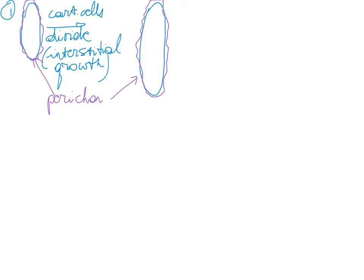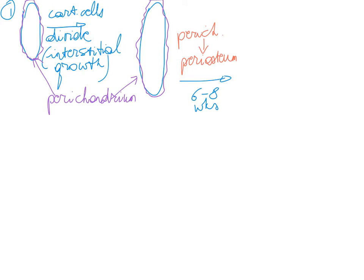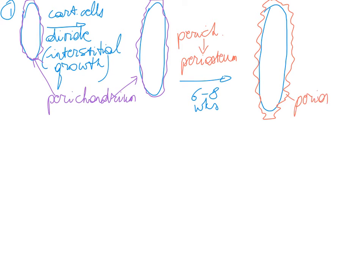Let's say now that we are, as a fetus, about six to eight weeks old, and it's time for ossification to get started. One of the first things we're going to see is that the perichondrium becomes periosteum. Somehow the perichondrium around the cartilage structure reaches a level of maturity and becomes periosteum. So now we have our cartilage structure with its double-layered periosteum around it, and it continues to grow.